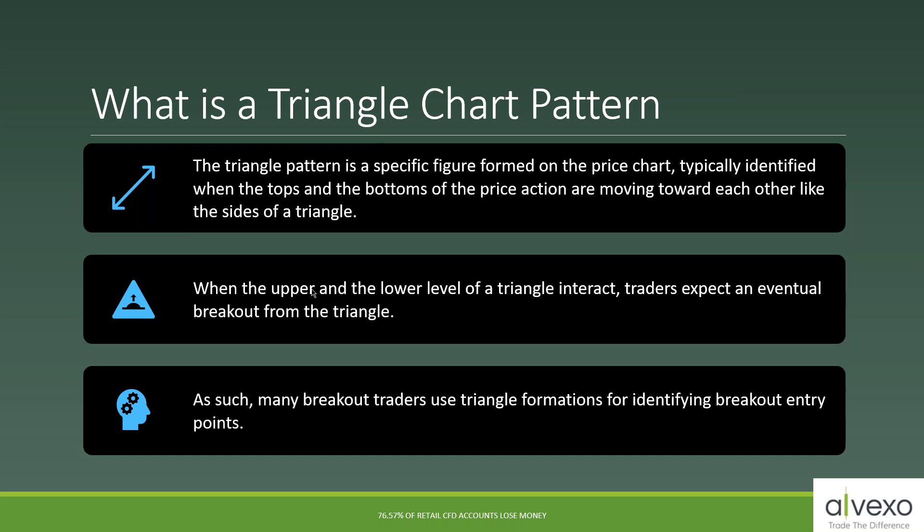A triangle pattern is a specific figure formed on the price chart, typically identified when the tops and bottoms of price action are moving towards each other like the sides of a triangle. When the upper and lower levels intersect, traders expect an eventual breakout. It's two lines moving at different degree angles that intersect each other. In the trading industry, we have three standardized kinds of triangles: ascending, descending, and symmetrical.